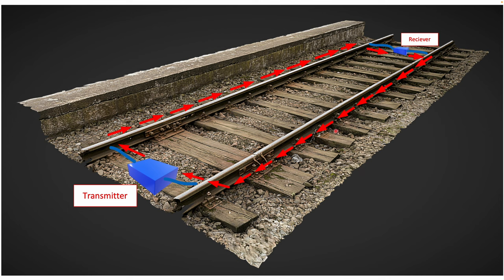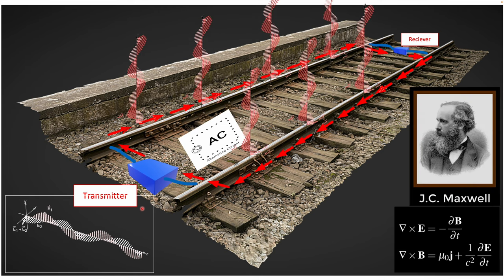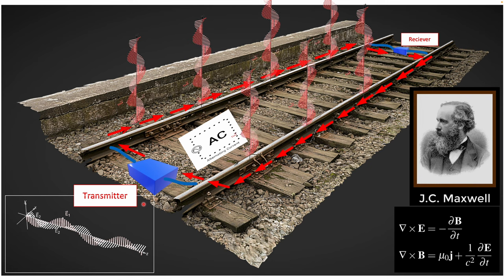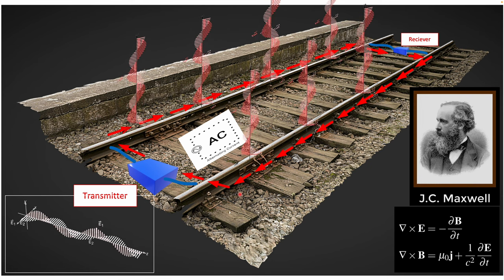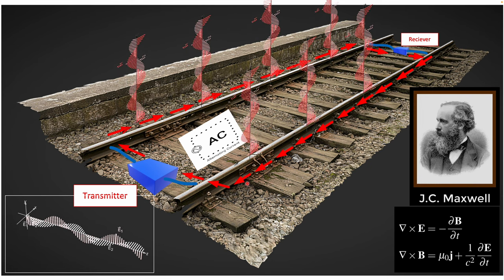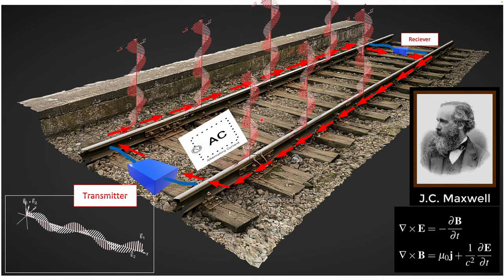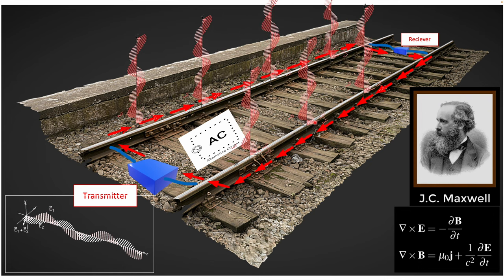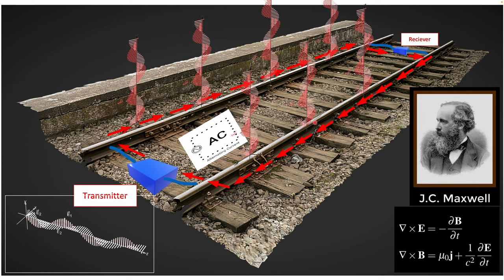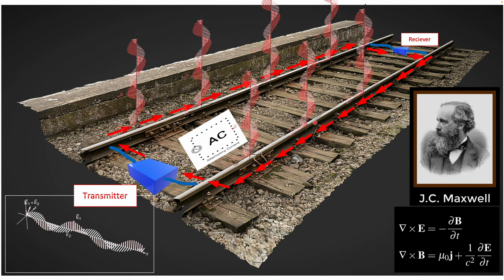Looking at the track circuit with a very basic diagram, there's a transmitter and a signal that goes into the receiver and then comes back to the transmitter. The signal can be either in the form of an alternating current or a pulsating DC current. Both of those cause emission of EM waves from the rail and cause the rail to act like an antenna, as covered in the previous video.